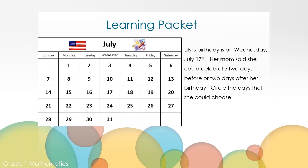Open your learning packet to the calendar page. Let's read this one together. Billy's birthday is on Wednesday, July 17th. Her mom said she could celebrate two days before or two days after her birthday. Circle the days that she could choose. Explain your thinking using numbers, pictures, and/or words.